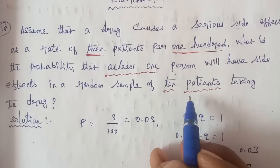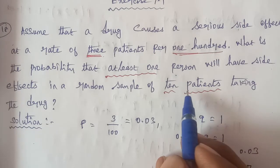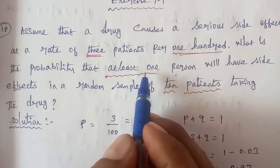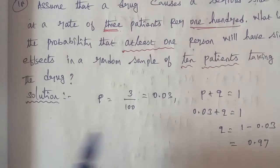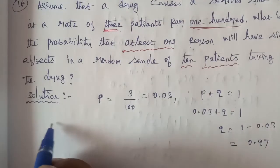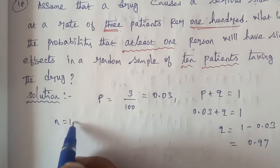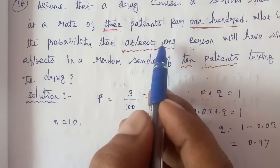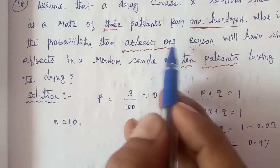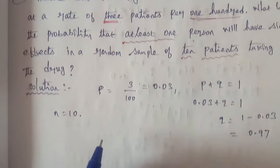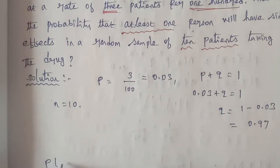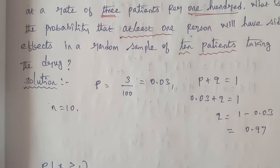Next, the number of patients: n is equal to 10. Now, at least 1 means P of X greater than or equal to 1, which equals 1 minus P of X less than 1. Since the only value less than 1 is 0, this becomes 1 minus P of X equals 0.